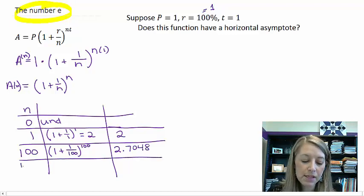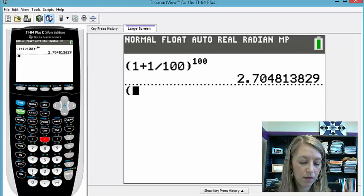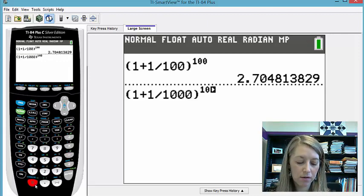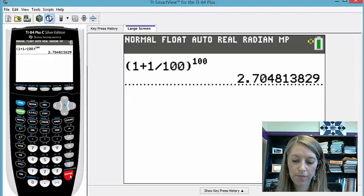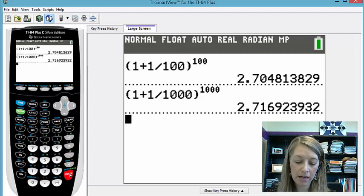What happens if I were to plug in 1,000? So 1 plus 1 over 1,000 to the 1,000th power. We get 2.7169.